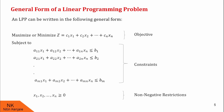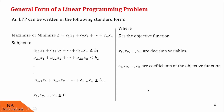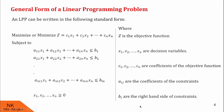Now, let us see the components involved in this LPP. Here, z is the objective function. x1, x2, ..., xn are decision variables. c1, c2, ..., cn are coefficients of the objective function. aij are the coefficients of the constraints, as you can see here. And the bi's are the right-hand side values of the constraints.